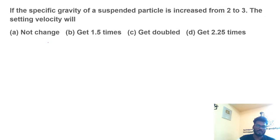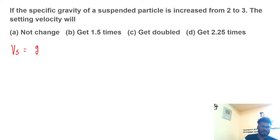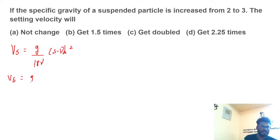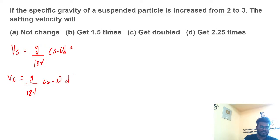The specific gravity of a suspended particle is increased from 2 to 3. The settling velocity will — what is the expression? Vs = g/18 × ν × (s − 1) × d². For specific gravity 2, using Stokes' equation: Vs = g/18μ × (2 − 1) × d².